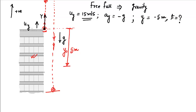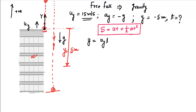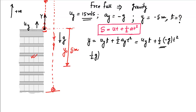We use the kinematic formula s = ut + ½at², which gives the distance for constant acceleration. Applying it in the y-direction: y = u_y·t + ½·a_y·t². Since a_y equals minus g, this becomes y = u_y·t − ½g·t². Rearranging, we get ½g·t² − u_y·t + y = 0, which is a quadratic equation in t.